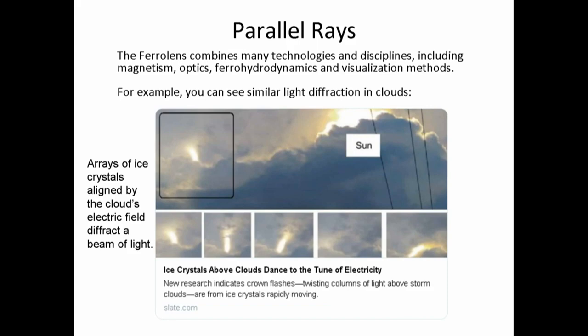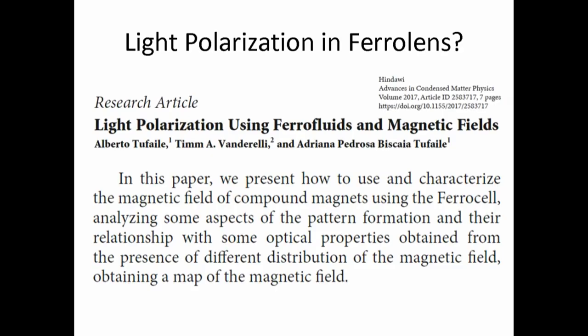The ferrolens combines many technologies and disciplines, including magnetism, optics, ferrohydrodynamics, and visualization methods. For example, you can see similar light diffraction in clouds where ice crystals aligned by the electric field diffract beams of light known as crown flashes. More information can be read in our article from 2017 on light polarization using ferrofluids and magnetic fields. At this point, I'm going to turn this over to my colleague Michael Snyder.